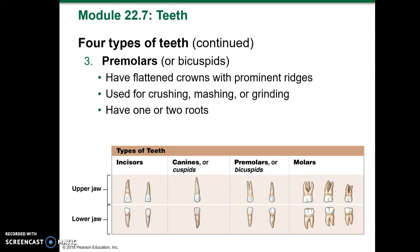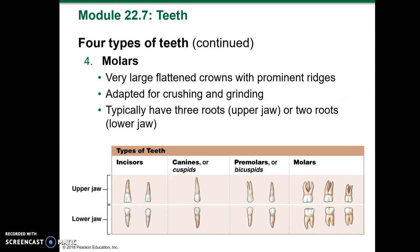The premolars, or bicuspids, have flattened crowns with prominent ridges; they're used for crushing, mashing, or grinding, and have one or two roots. The molars have very large flattened crowns with prominent ridges, adapted for crushing and grinding. They typically have three roots in the upper jaw or two roots in the lower jaw.